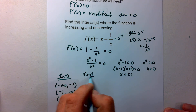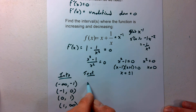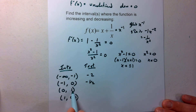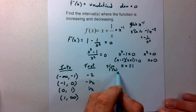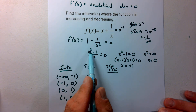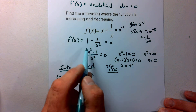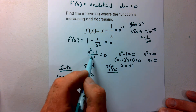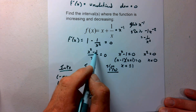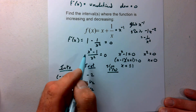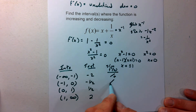I can find test values within these intervals: negative 2 for the first, negative one half for the second, one half for the third, and 2 for the fourth. I'm looking at the sign of f prime of x. Notice that x squared in the denominator is always positive, so the denominator is always positive. That means the numerator of this function determines the sign. For negative 2: negative 2 squared is 4, and 4 minus 1 is positive. For negative one half: one half squared is one fourth, and one fourth minus 1 is negative.